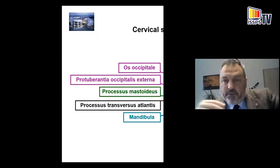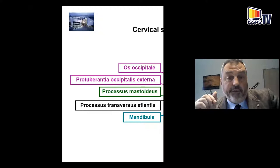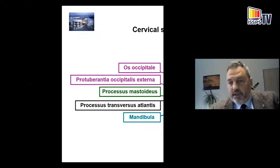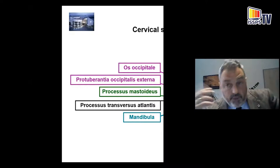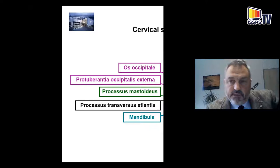You get the occipital bone with the external occipital protuberance. You get the mastoid process, which is also a very important part for one of the nerve fibers reaching the occipital area. And of course, you see the transverse process of the atlas, which is the most prominent part, just close to the mastoid process. And then the spinous processes of C2 to C7, where C2 can sometimes be difficult to palpate due to the high body mass index of patients.